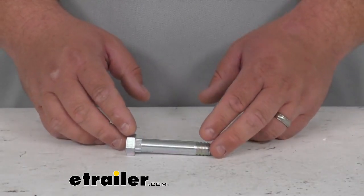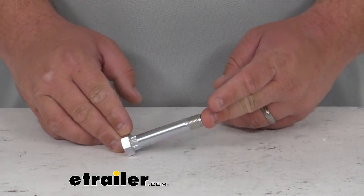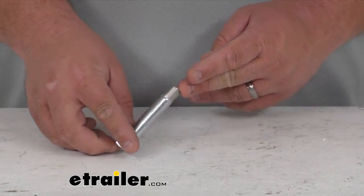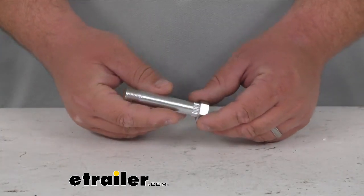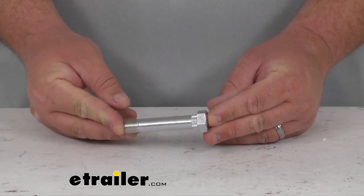This is a replacement shackle bolt to secure your springs for one and three quarter inch wide double eye trailer suspensions. It is a replacement shackle bolt for your easy flex suspension kits.